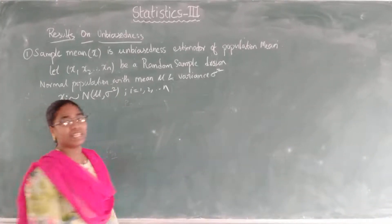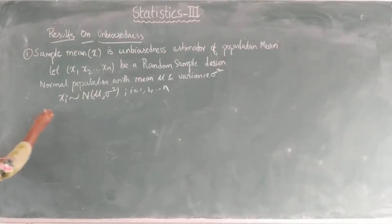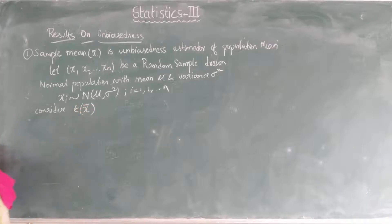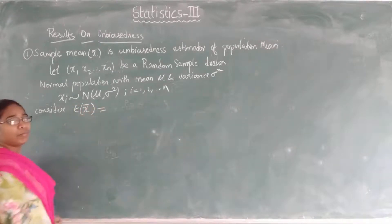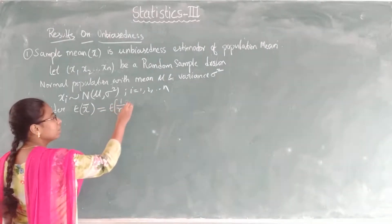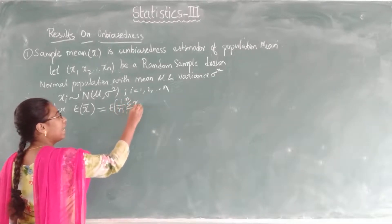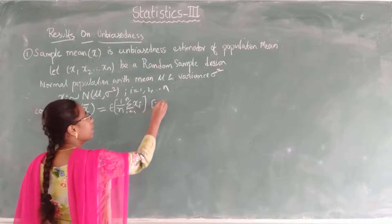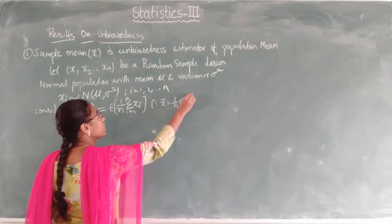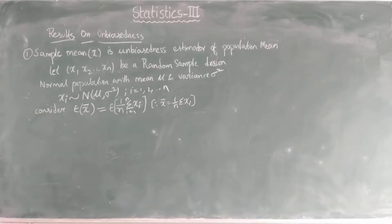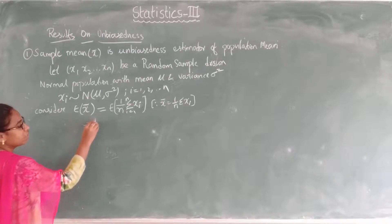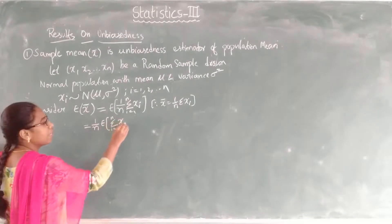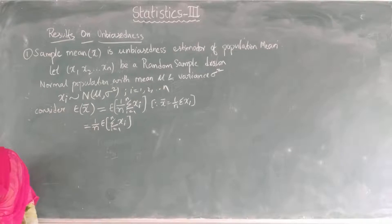To find expectation of x̄, consider: expectation of x̄. What is x̄? It is the sample mean, and x̄ equals 1/n times summation of xᵢ. Bringing the constant outside: 1/n times expectation of summation xᵢ. The summation from i=1 to n of xᵢ can be written as x1 plus x2 plus ... plus xn.